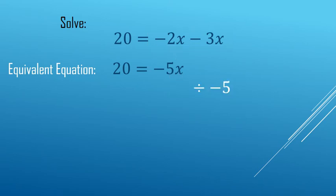So negative 5x divided by negative 5 is just plain x equals 20 divided by negative 5, which is negative 4. Of course, you can write it this way as well.